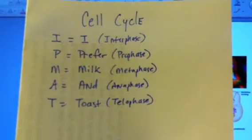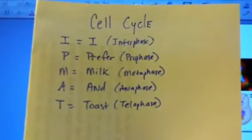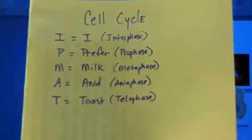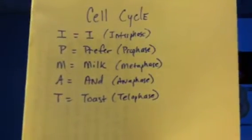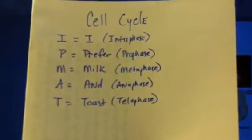Each one of the letters IPMAT stands for interphase, prophase, metaphase, anaphase, and telophase in that order. So you can remember the cell cycle easily if you think about breakfast and say I prefer milk and toast.